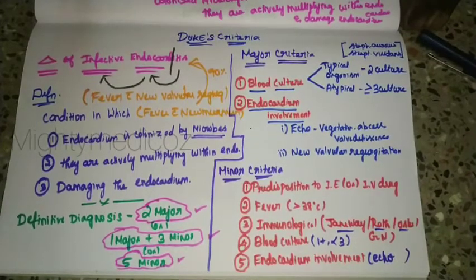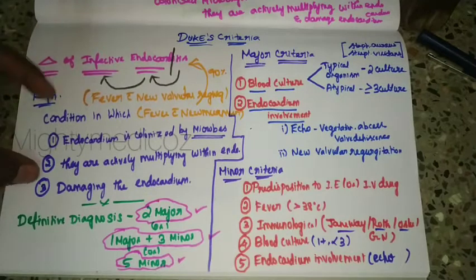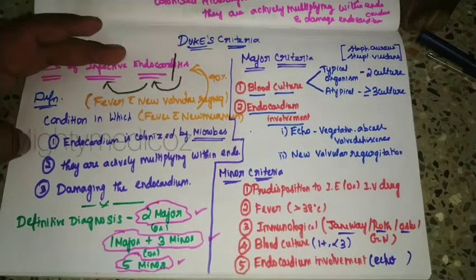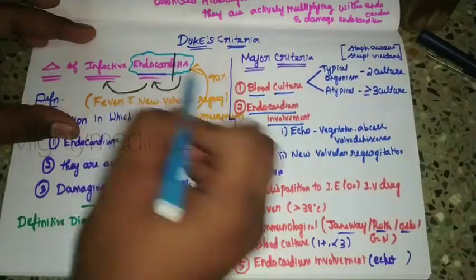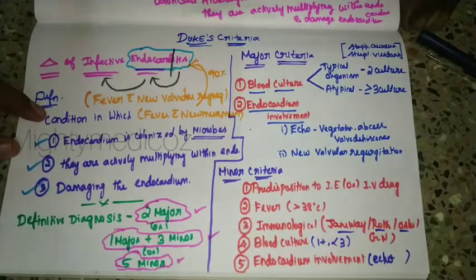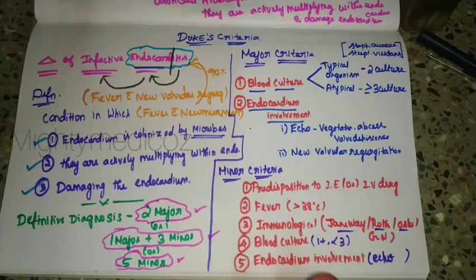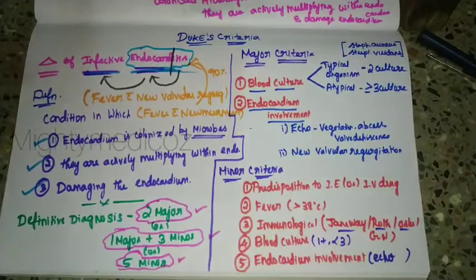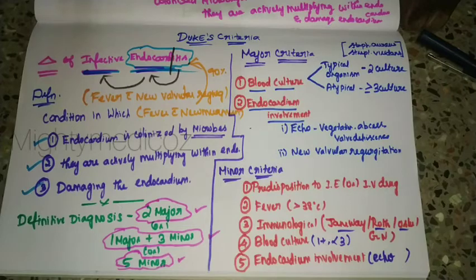Let us now know about Duke's criteria. The definition of infective endocarditis is inflammation of the endocardium due to infection. To get more information about infective endocarditis, look for the playlist. I have a playlist on CVS covering congenital heart disease and valvular heart disease. In the upcoming videos, we will talk more about infective endocarditis. Please subscribe to our channel, like, share, and comment on this video. Thank you.